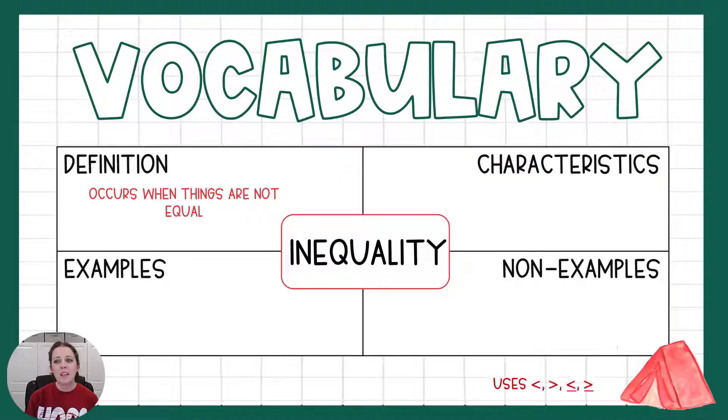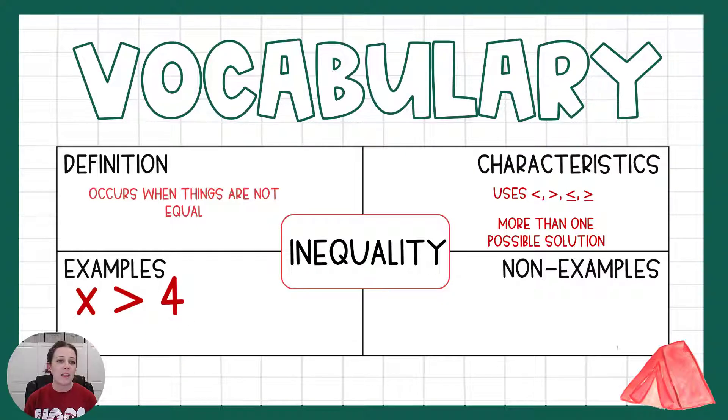Some characteristics: they use different inequality signs. You have less than, greater than, less than or equal to, greater than or equal to, and they have more than one possible solution, more than one possible answer. Some examples might look like x is greater than 4, or x is less than or equal to 2. Non-examples, if it means not equal, are those things that are equal to.